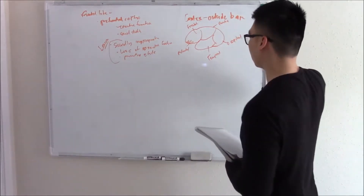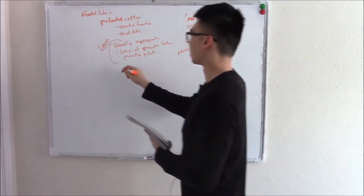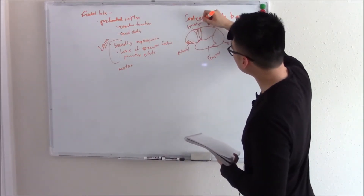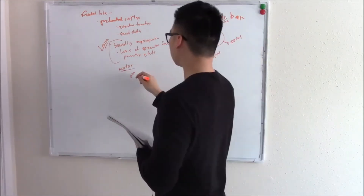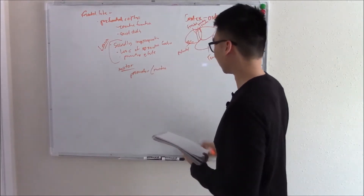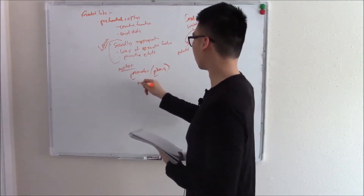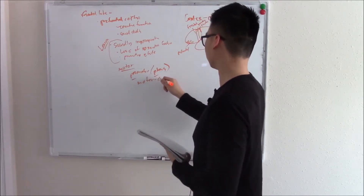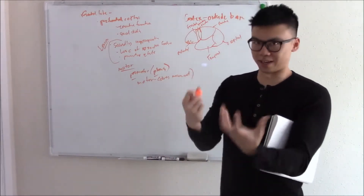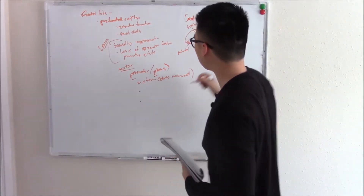One of the biggest and most important functions of your frontal lobe is the motor cortex. This motor area is divided into two things: the pre-motor, which plans your movement, and the actual motor proper, which does the movement. So your motor cortex plays a huge role in everything we do.